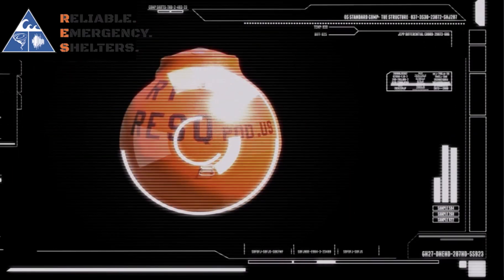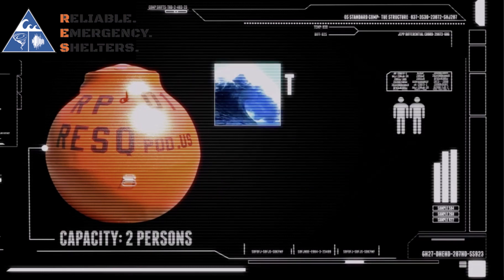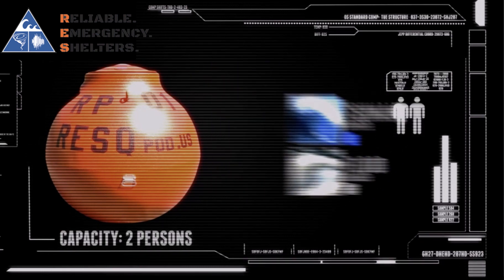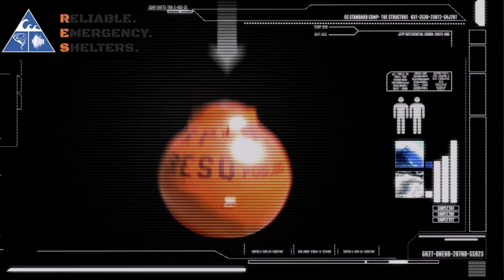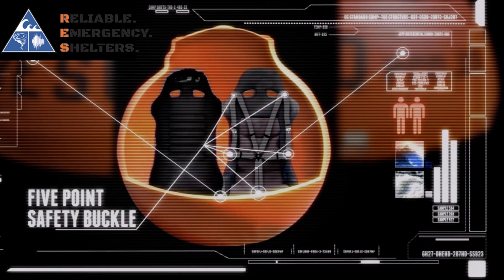The rescue pod is designed to hold two people in the event of a tsunami or massive flood. They both get in through the top of the rescue pod, get into safety seats, and then strap on their harnesses.